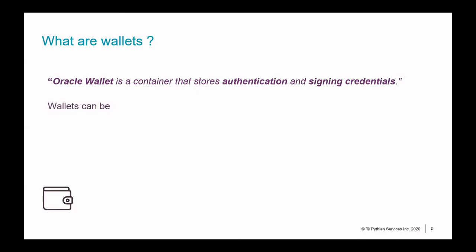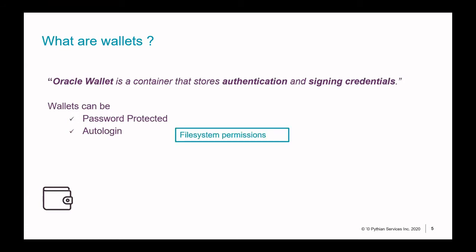Wallets can be of a few types. One is a password-protected wallet, which is secured by a password — the name is self-explanatory. The other type is an auto-login wallet. That may not sound secure, but in an auto-login wallet, your wallet is protected not by a password but by your file system permissions.